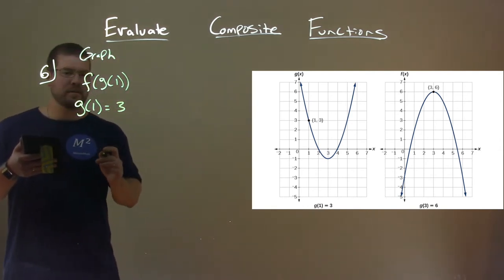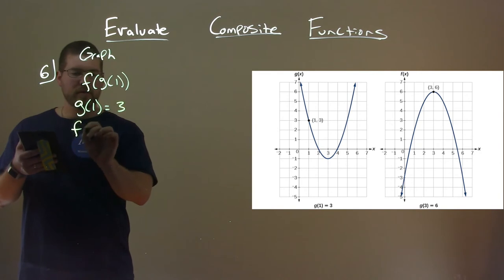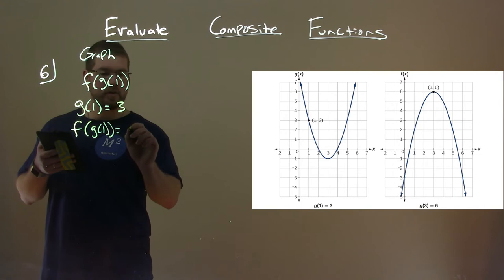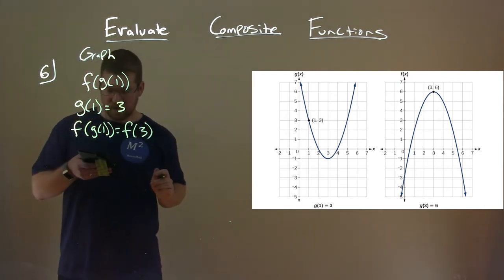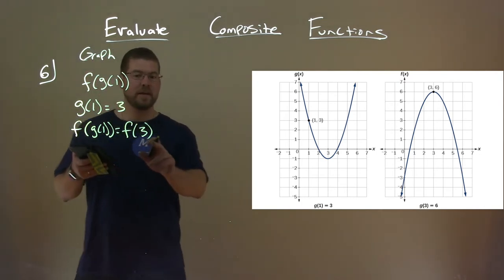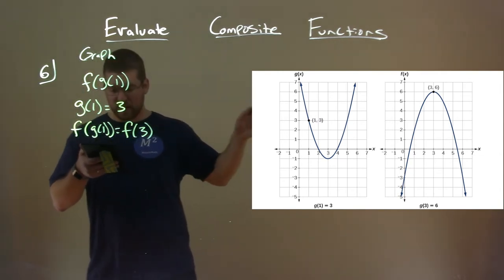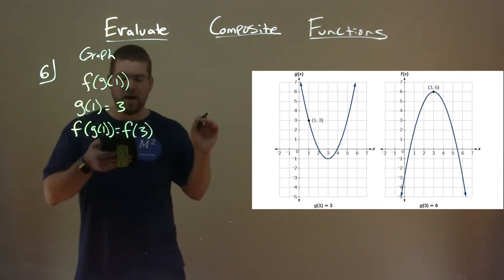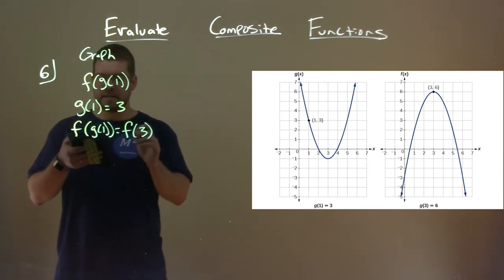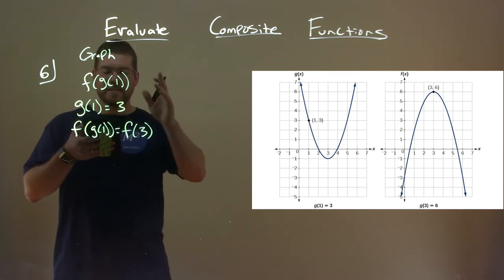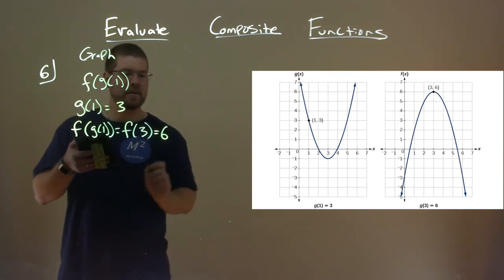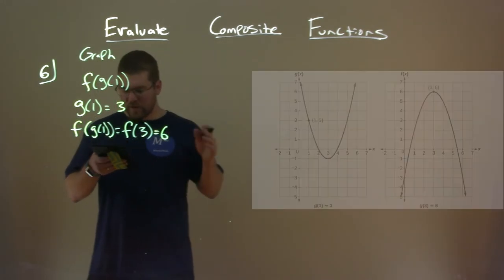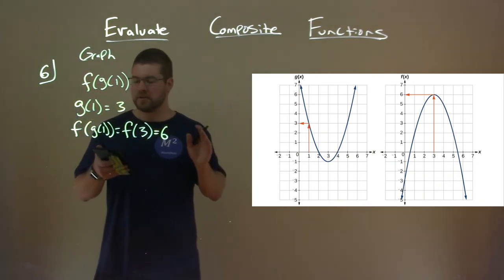Then with that information we're given, plug it in. So f of g of 1, well, g of 1 we know is 3, so now we have to find f of 3 here. Well, it's f of 3. So we take the graph, the f of x graph, the second one, and we see the input there, the input of 3 gets plugged in, so the x is 3, and we look up and we see 6, the output of 6. So f of 3, 3 input, output of 6 there. We can see that here with the other graph here that shows the arrows.